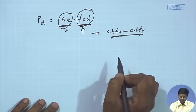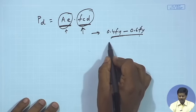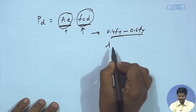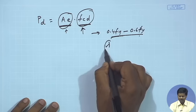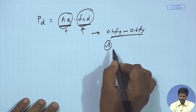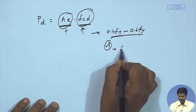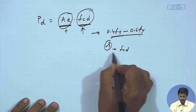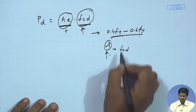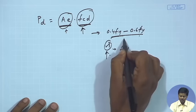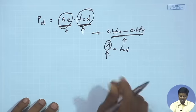Otherwise, we can consider the lambda value — the radius of gyration. If we know the radius of gyration, then from table 9 we can find out the value of Fcd. So either we can choose the radius of gyration or we can choose Fcd directly and then proceed.